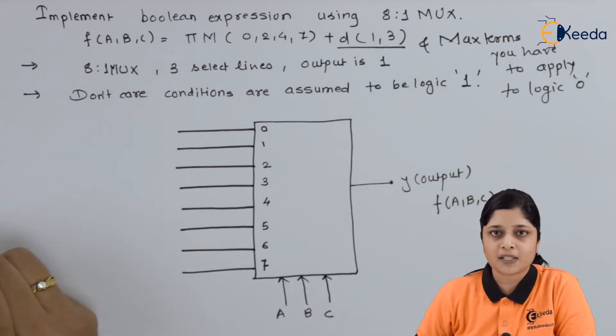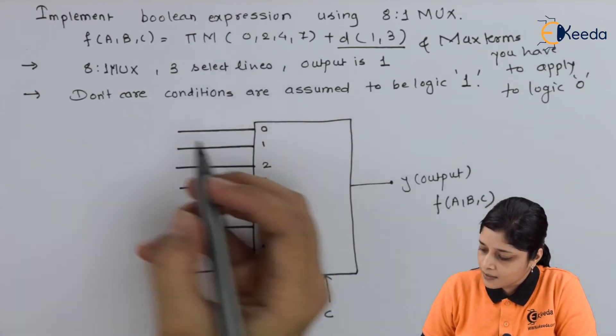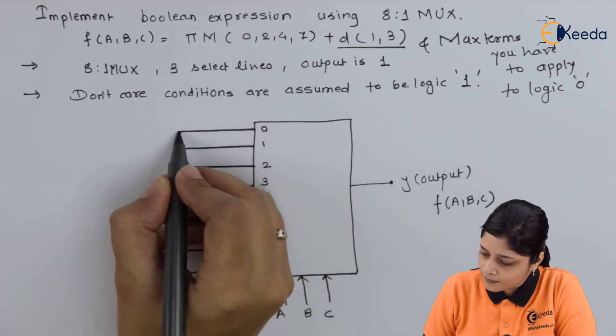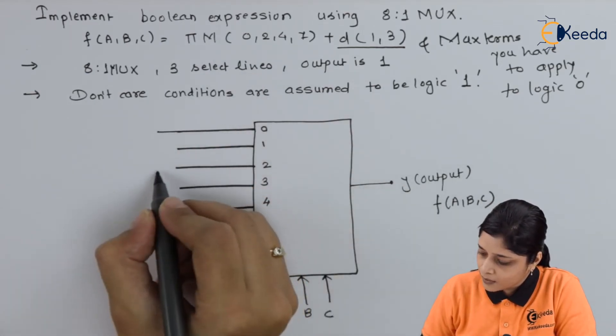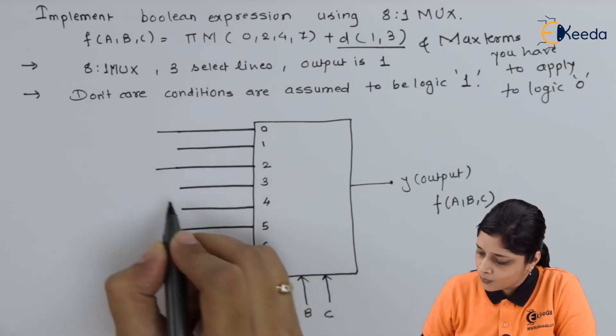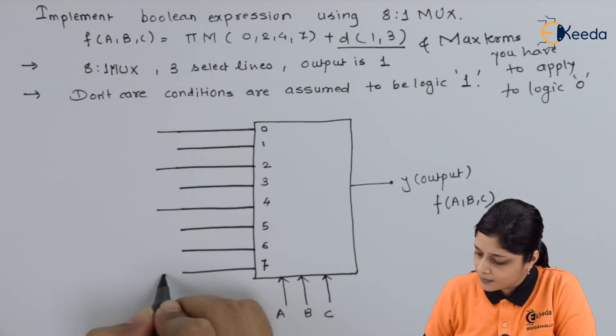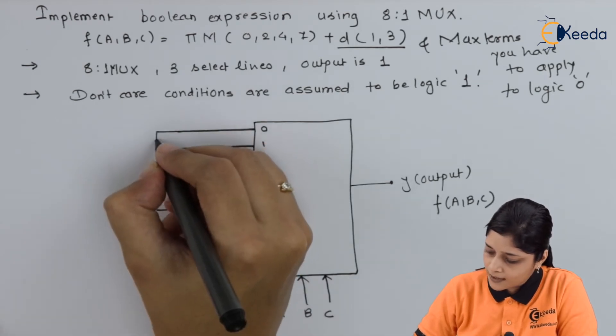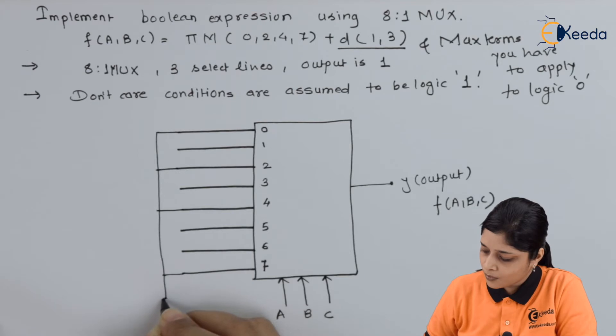So we will calculate the max terms. Here 0 is the max term, then 2, 4 and 7. All these terms you have to connect to logic 0.